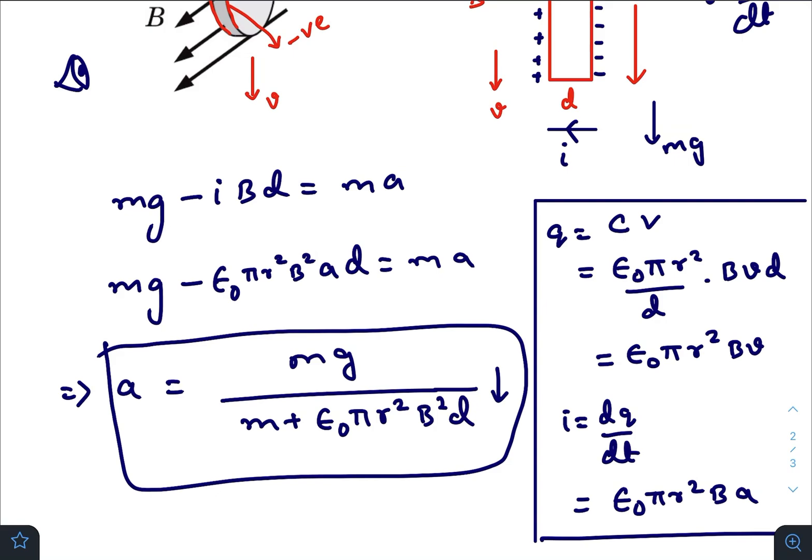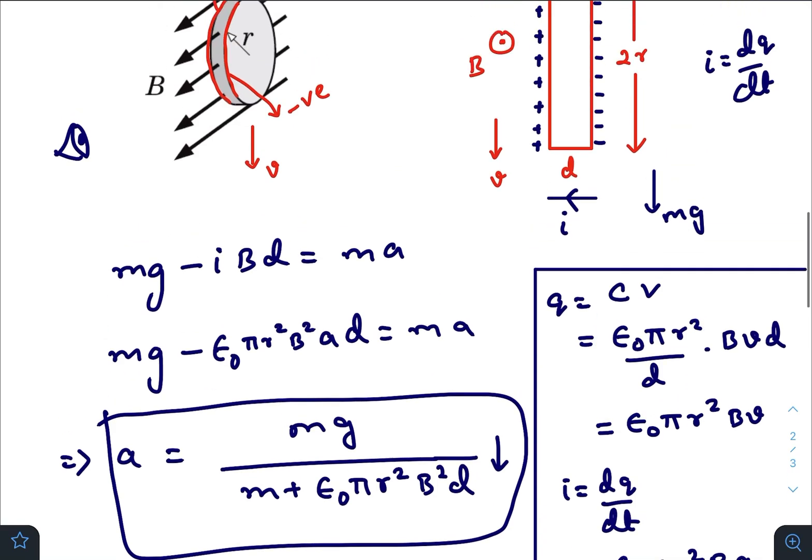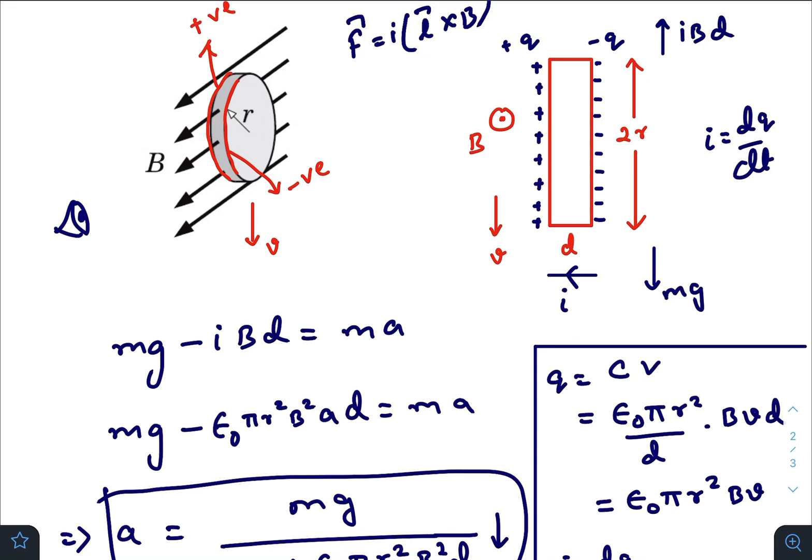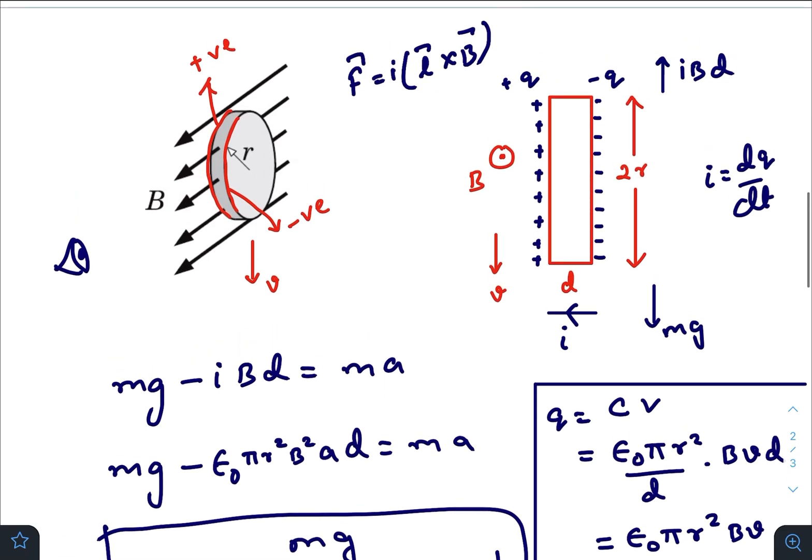So this is the capacitance. V is the potential difference, and we know that it is a motional EMF, according to the formula L dot V cross B, where L is the length of this conductor.